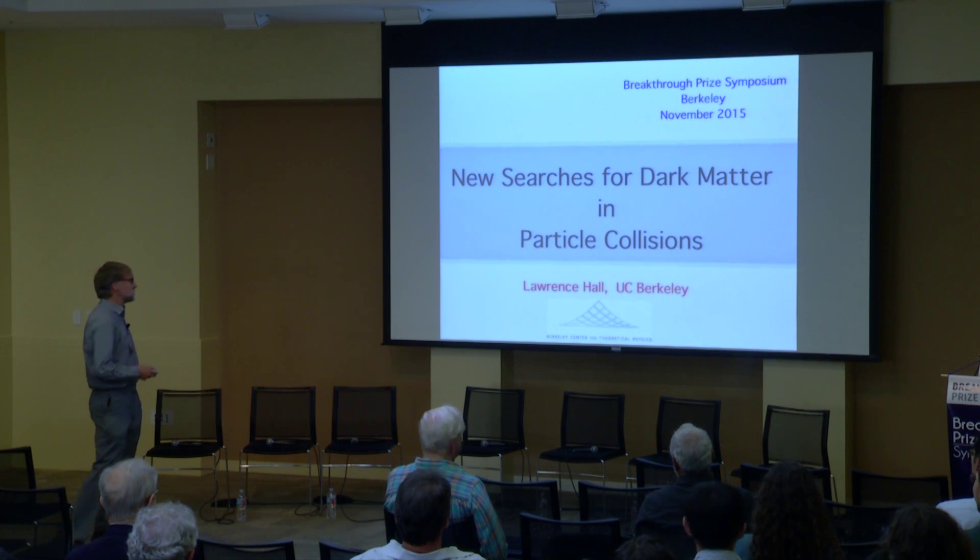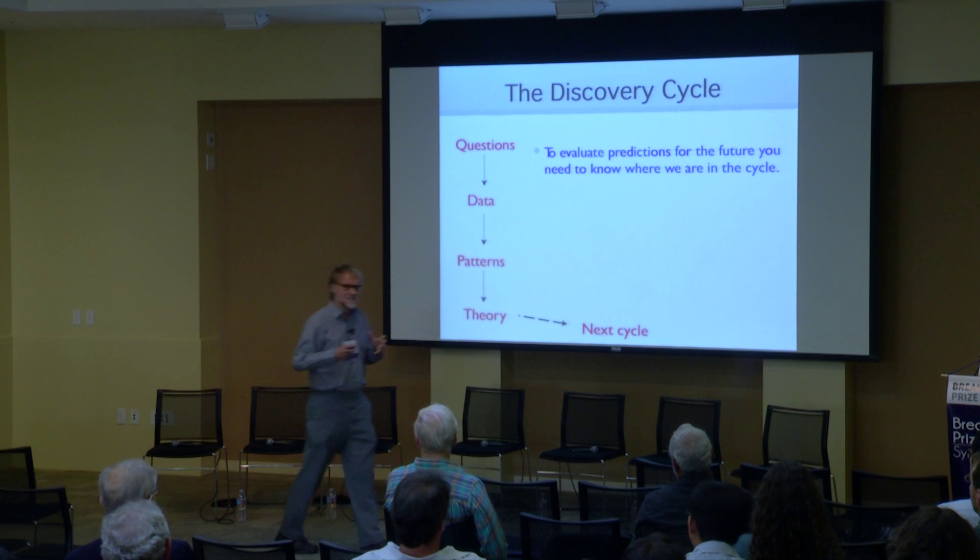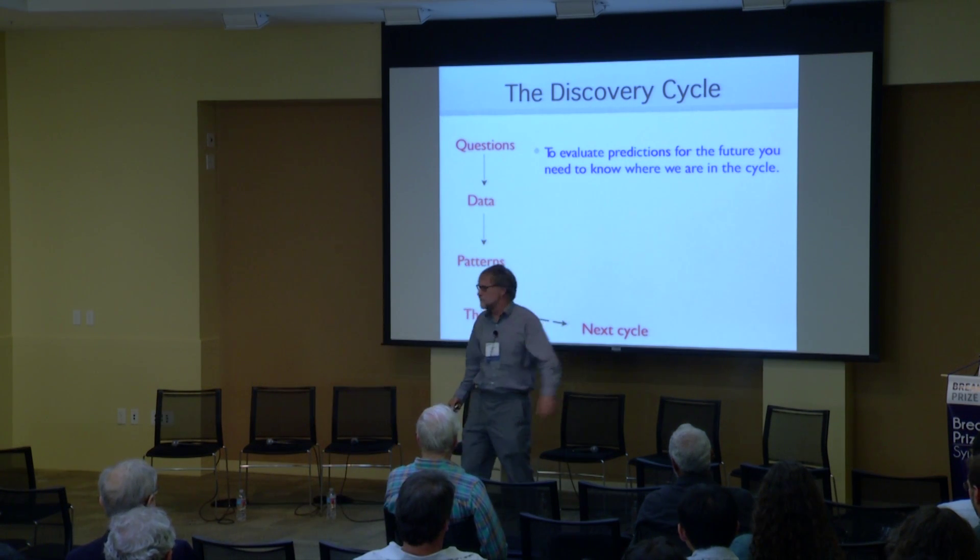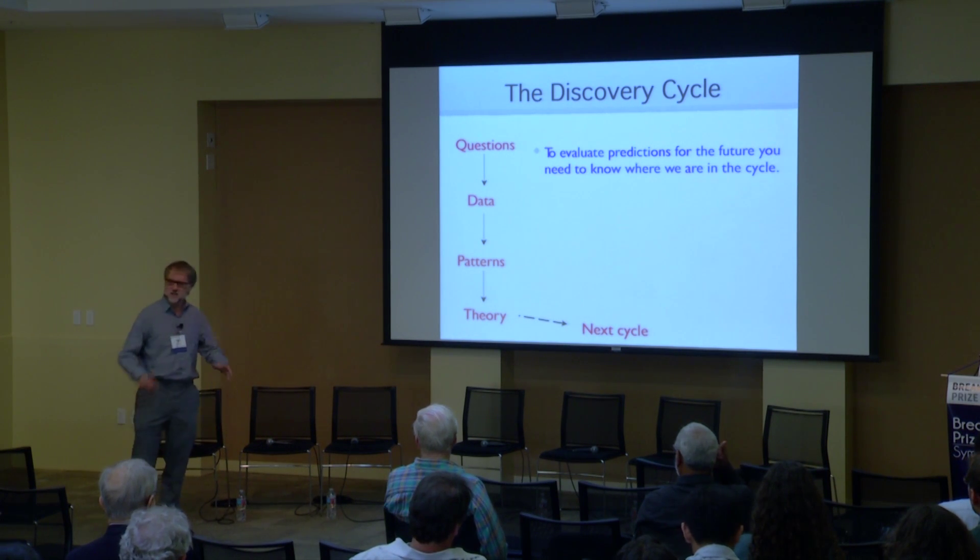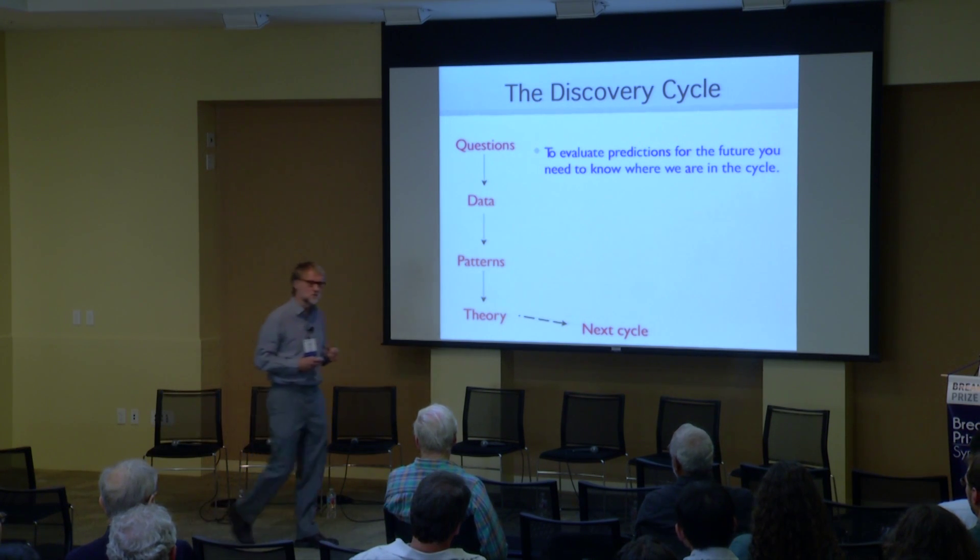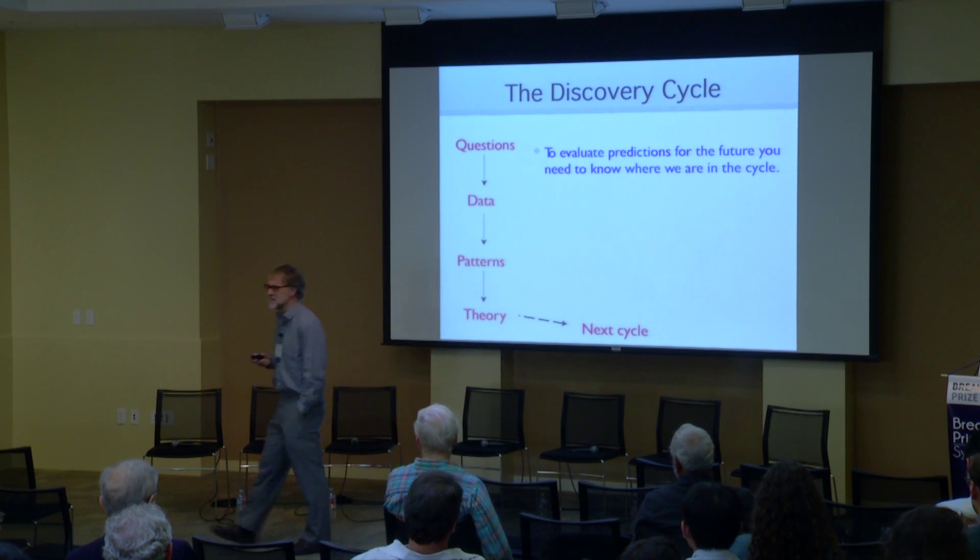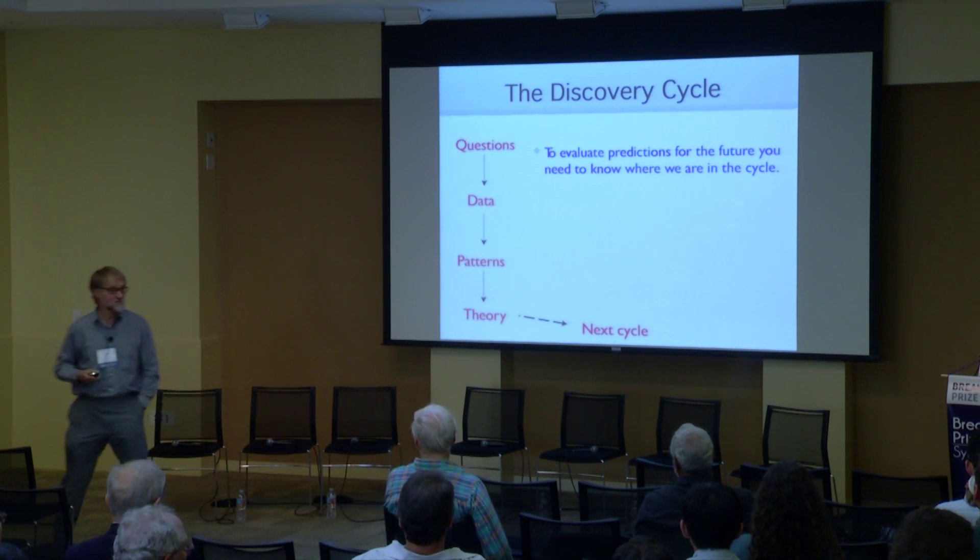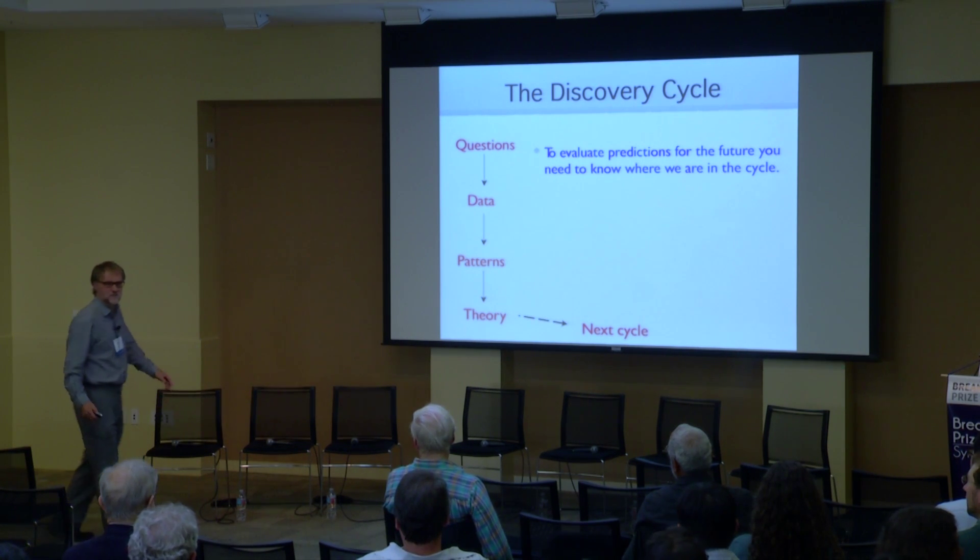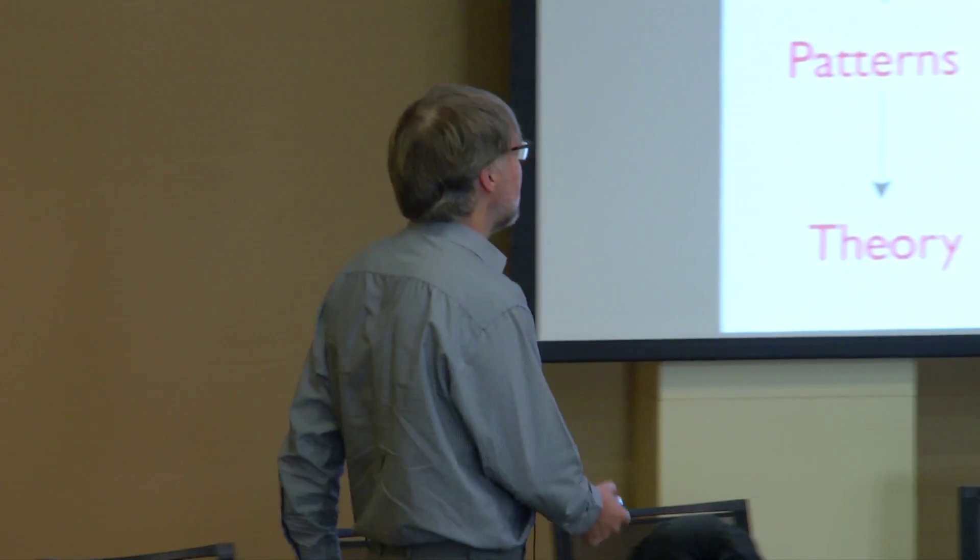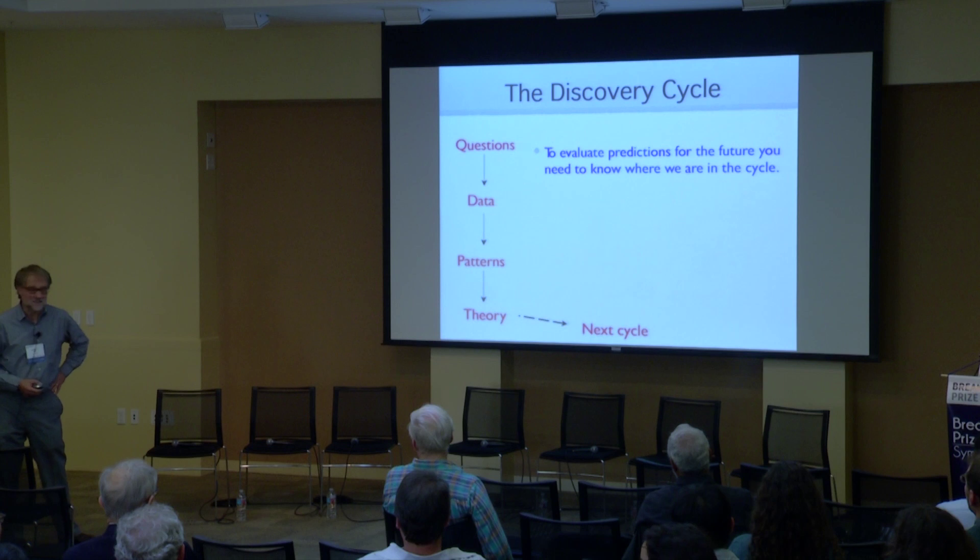New searches for dark matter in particle collisions. I'm going to predict a very, very definite idea for what we might discover at the LHC. What we might discover is not just a new particle, but a new particle whose decay is going to tell us what the origin of dark matter was and how it was produced in the early universe. That's a pretty definite prediction, and in order to understand and for you to evaluate that prediction, you need to know where we are in what I call the cycle, the discovery cycle.